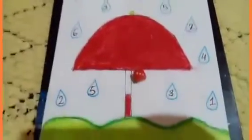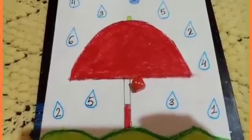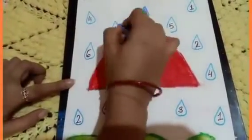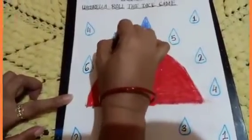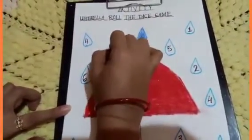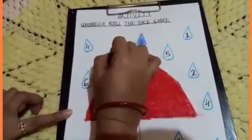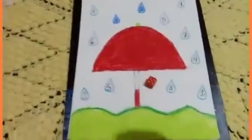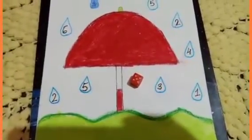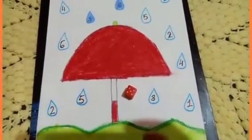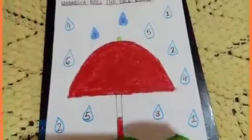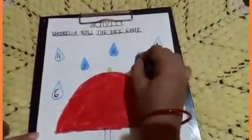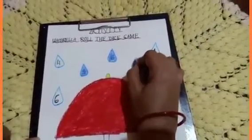Okay children, next. Next number is 3. So where is 3? This one. This is another raindrop. Okay children, next. Which number came? 5. So let me see where is 5. Can you see where is 5? Yes, yes. This is number 5.